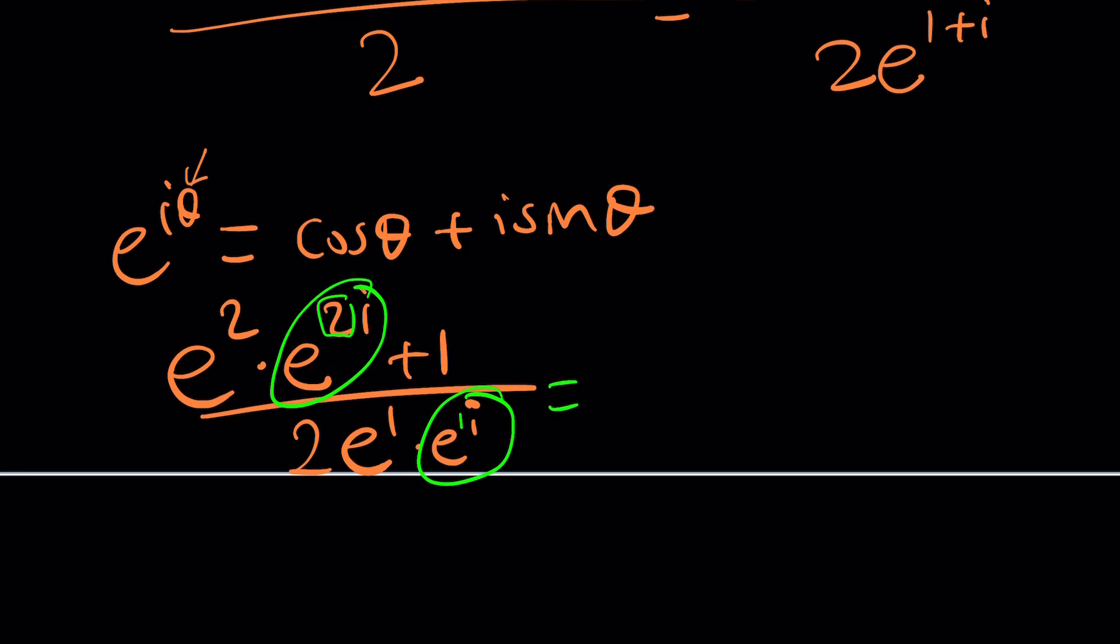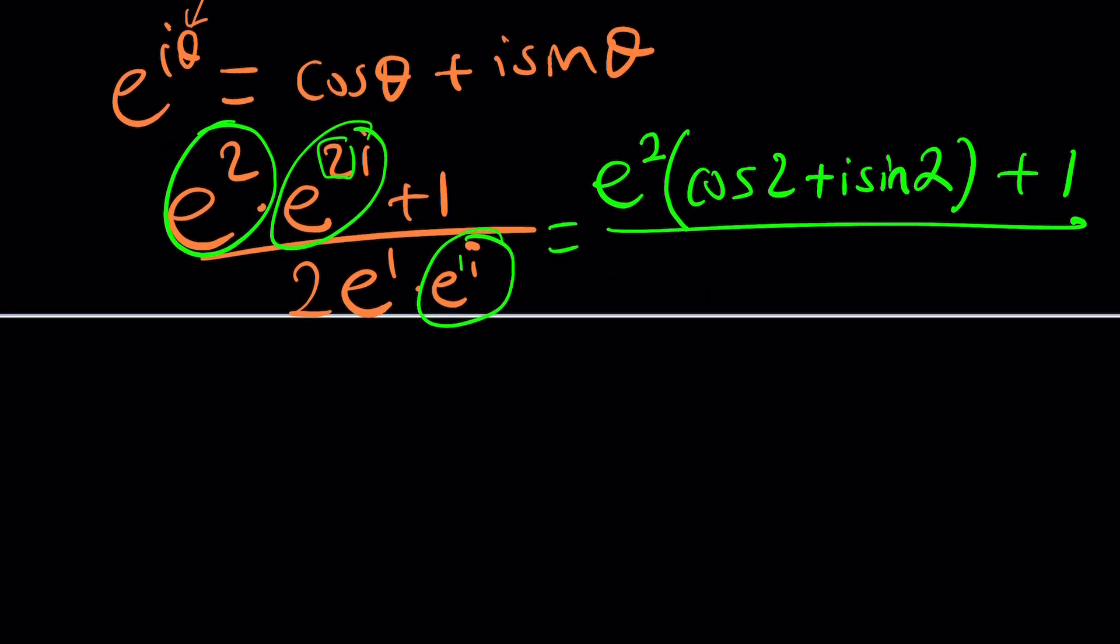So it's going to look like this. Of course, e squared is a real number. We don't have to worry about it. But e squared will be multiplied by cosine of two plus i sine of two. And now you're going to add one to it. And all of that is divided by two e multiplied by cosine of one plus i times sine of one. If you want to do the conjugacy, so on and so forth, you can do that. But I would just leave it at that. This is fine. You can evaluate it, plug it in. And guess what? At the end, you get a complex number like a plus pi.